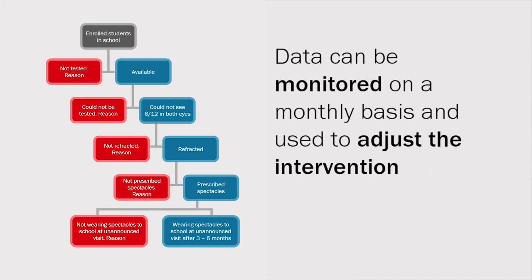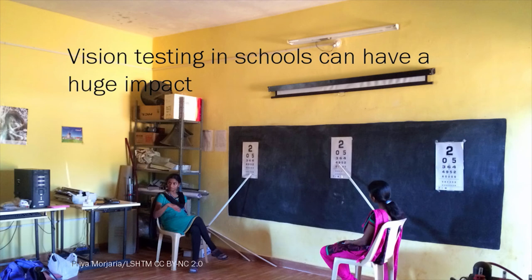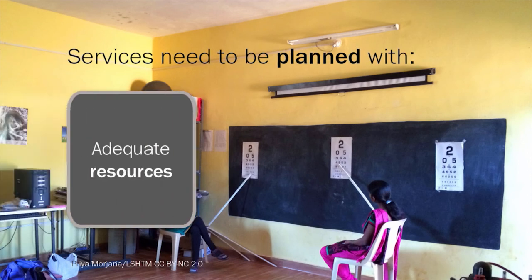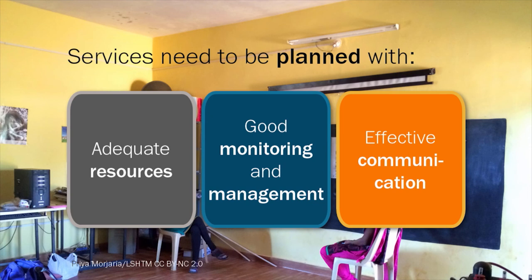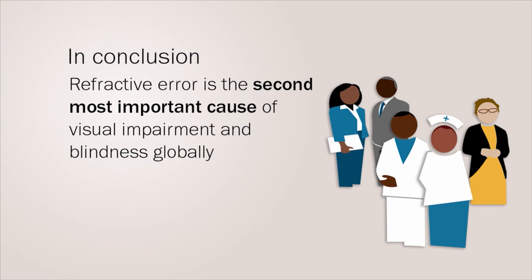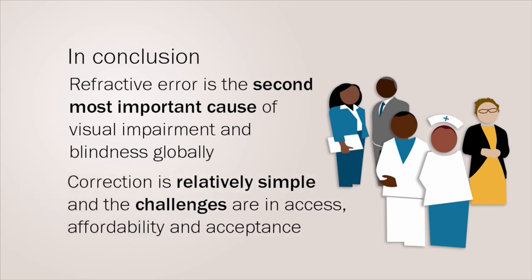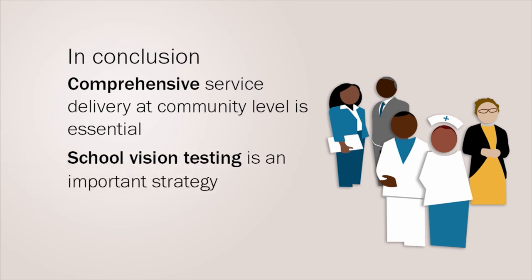This data can be monitored on a monthly basis and used by management to adjust the intervention appropriately. Vision testing in schools is simple to conduct and can have a huge impact on children and their education. Services need to be planned with adequate resources, good monitoring and management, and supported by effective communication between schools and optometry services. In conclusion, refractive error is the second most important cause of visual impairment and blindness globally. Correction is relatively simple and the challenges are in access, affordability, and acceptance of spectacle correction. Comprehensive service delivery at the community level is essential, and school vision testing is an important strategy that can be done by trained and willing teachers.